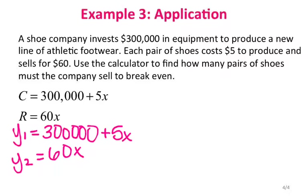The lines didn't intersect on the initial window, so I extended x max — trying 500, then 3,000, then 10,000. It's a lot of trial and error, but I can see both lines getting closer.